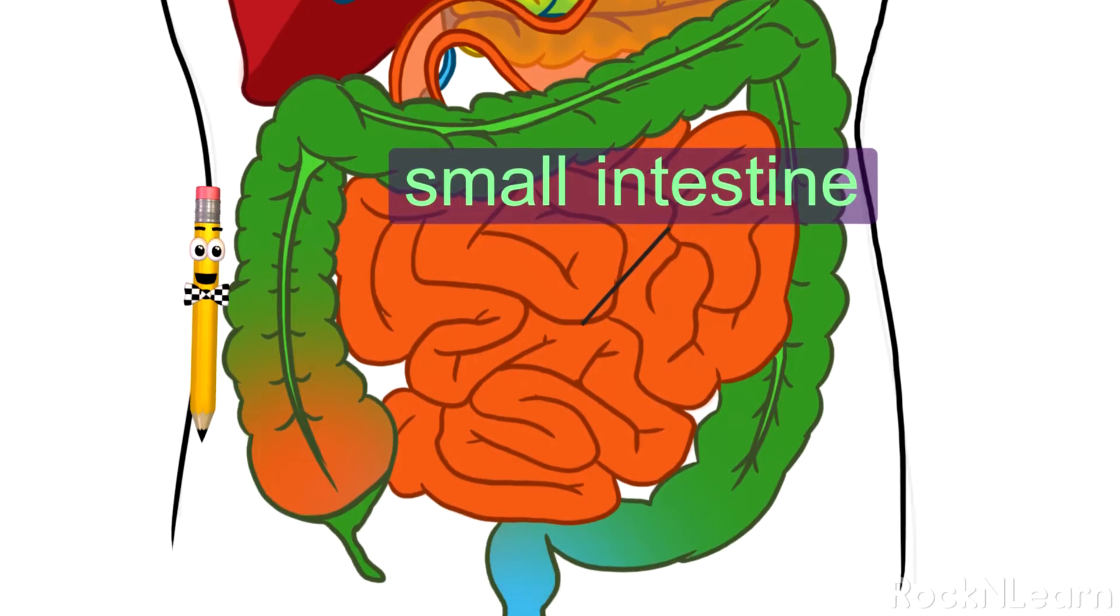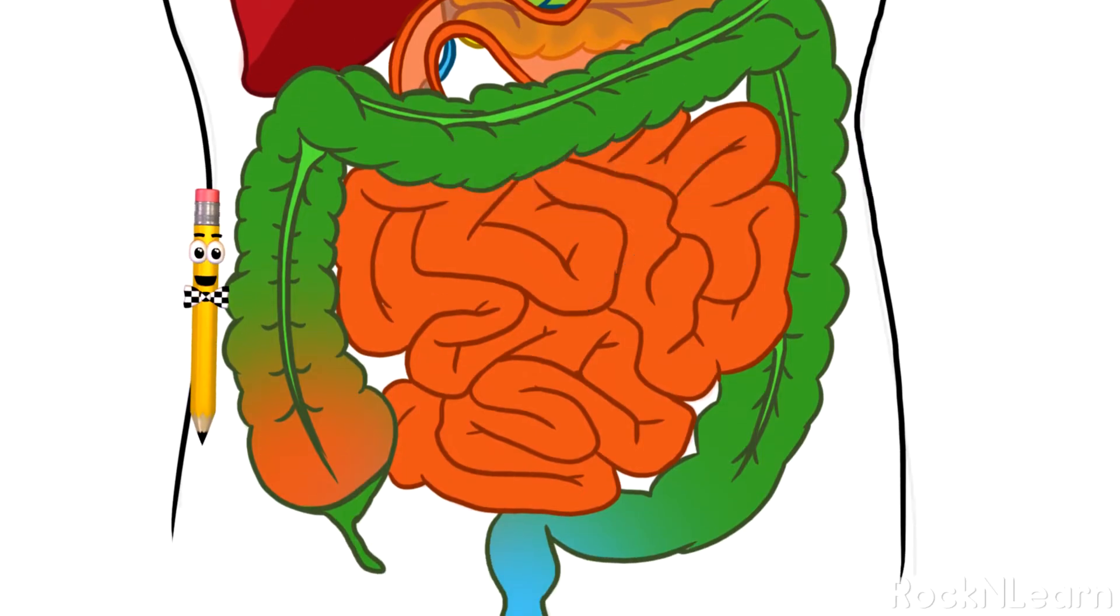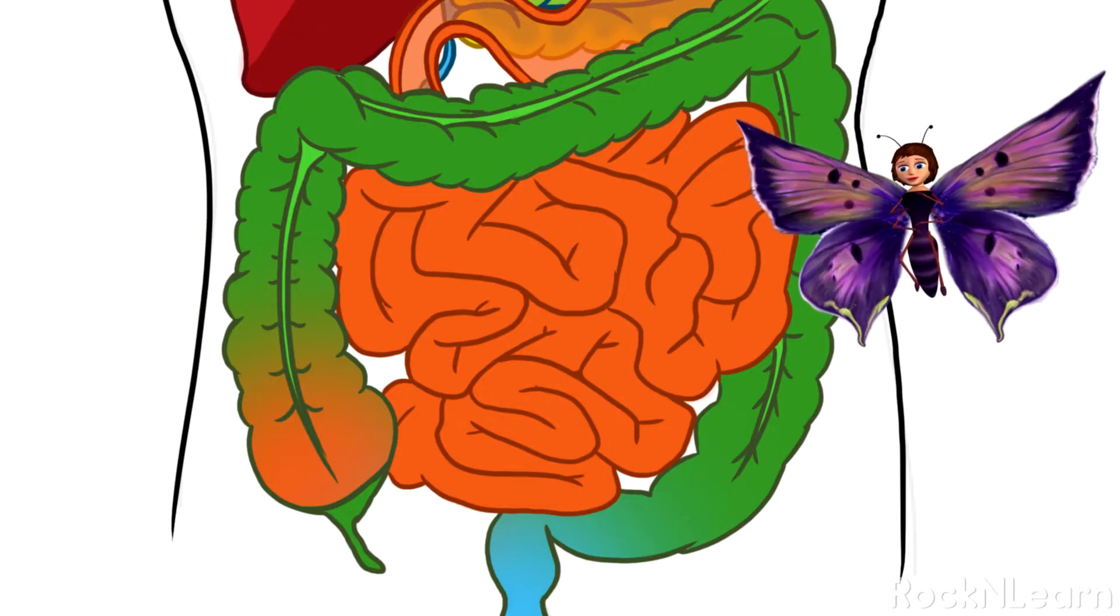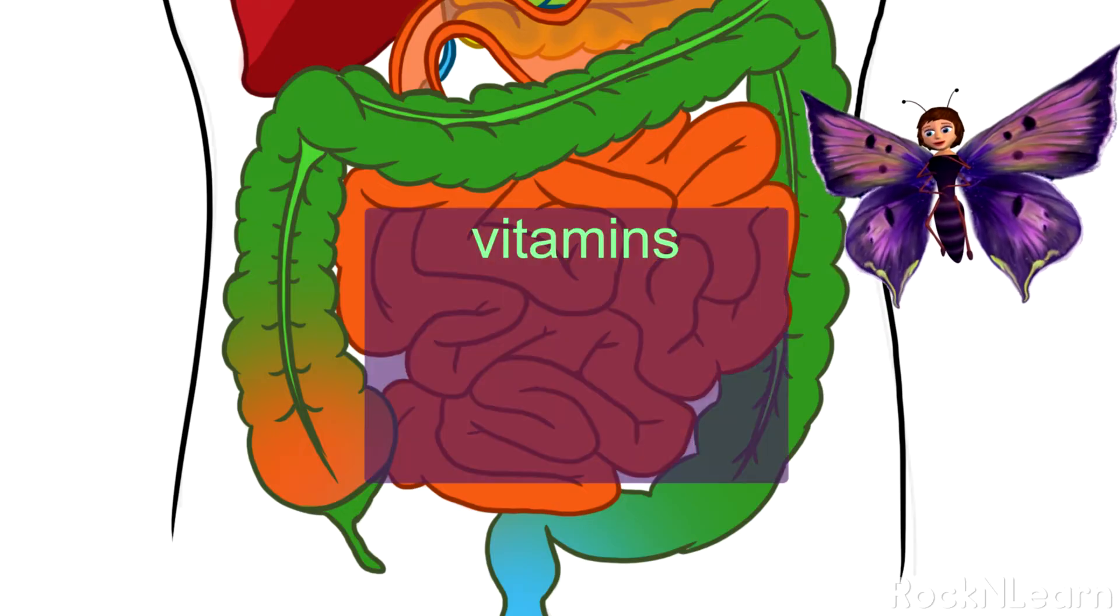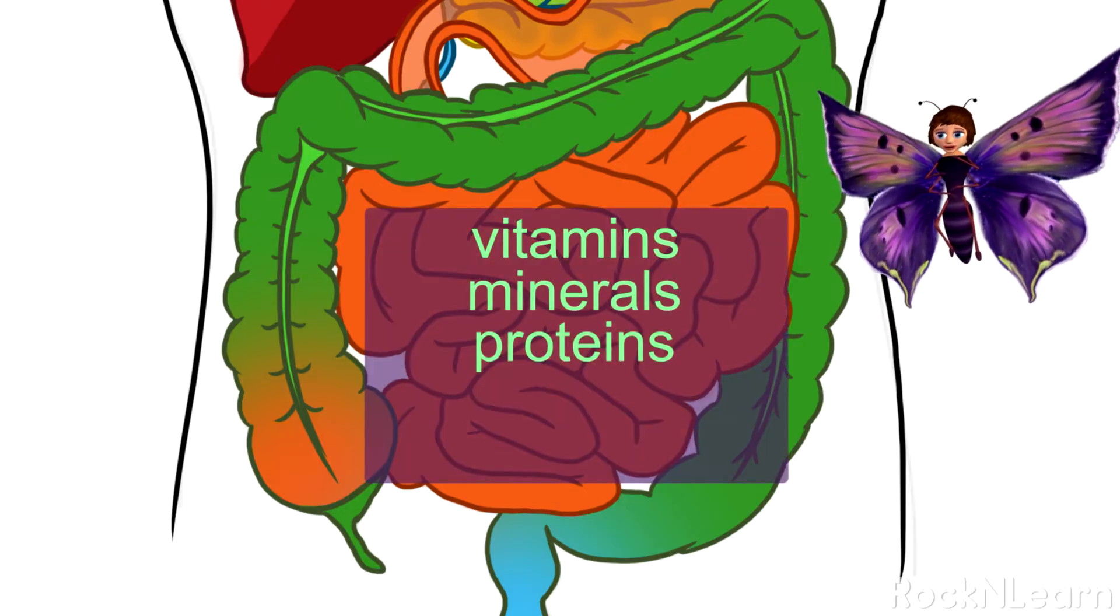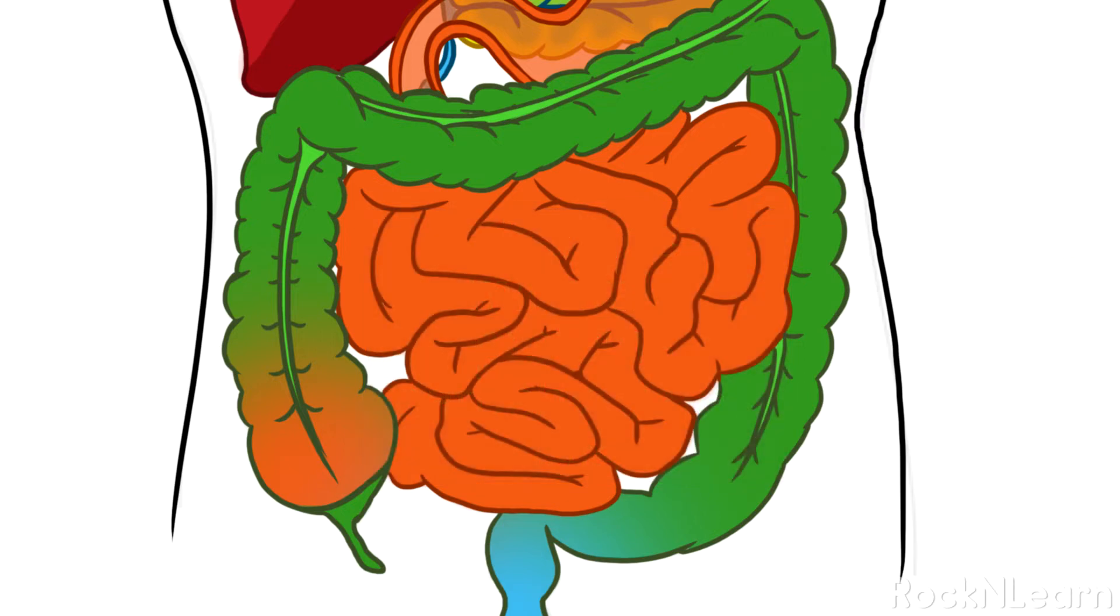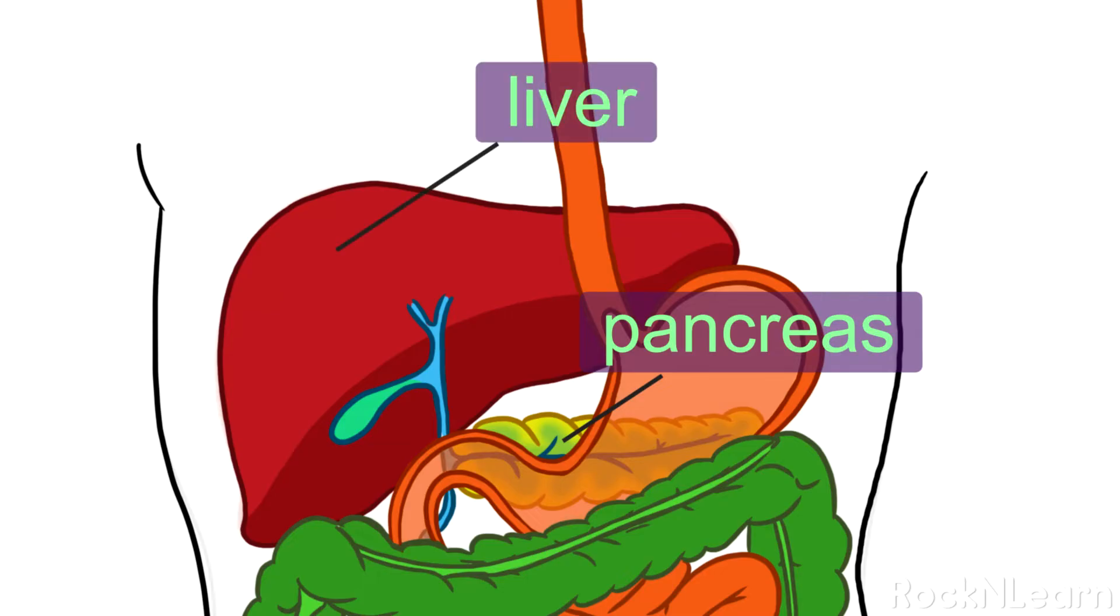The small intestine is a long tube with about a 1 inch diameter. It's packed inside you beneath your stomach. An adult small intestine is about 22 feet long. The small intestine breaks down the food mixture even more, so your body can absorb all the vitamins, minerals, proteins, carbohydrates and fats. The small intestine can help extract these nutrients with a little help from the pancreas, liver and gallbladder.